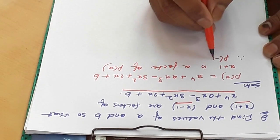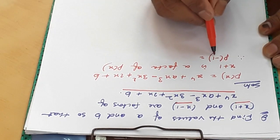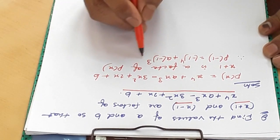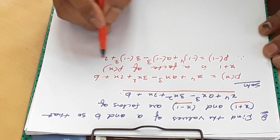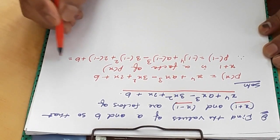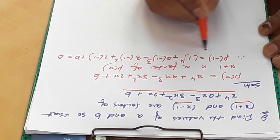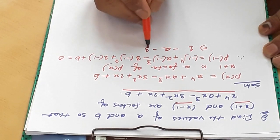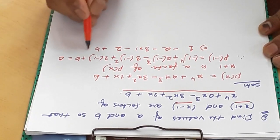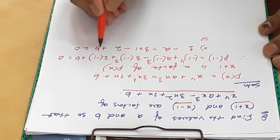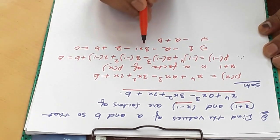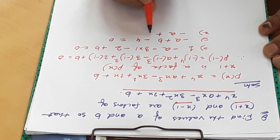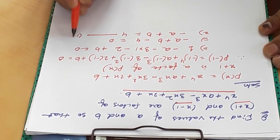Therefore, we evaluate P(-1). We put minus 1 in place of x: (-1)⁴ plus a(-1)³ minus 3(-1)² plus 2(-1) plus b equals 0, since x plus 1 is a factor. Solving this: (-1)⁴ is 1, a(-1)³ gives minus a, minus 3(1) gives minus 3, and 2(-1) gives minus 2, plus b equals 0. So minus a plus b minus 3 minus 2 plus 1 equals 0, giving minus a plus b minus 4 equals 0. Therefore, minus a plus b equals 4. This is Equation 1.